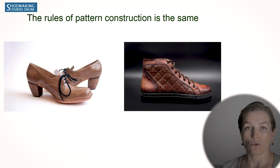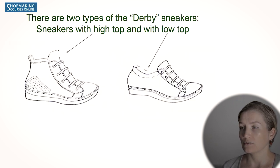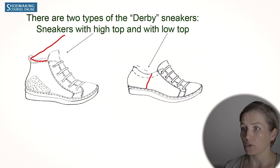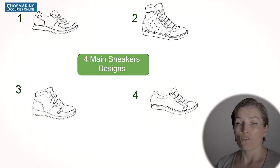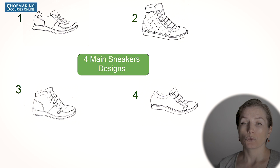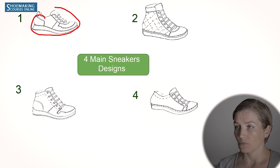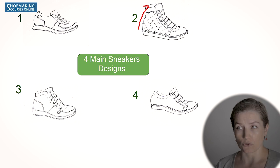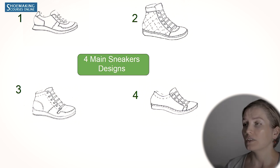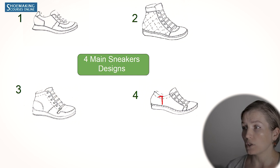This is the difference between sneakers based on Oxford construction and sneakers based on derby construction. In the derby-based construction we also have two types: sneakers with high top and sneakers with low top. So in total we have four types: sneakers with low top based on Oxford construction, sneakers with high top based on Oxford construction, sneakers with high top based on derby construction, and sneakers with low top based on derby construction.